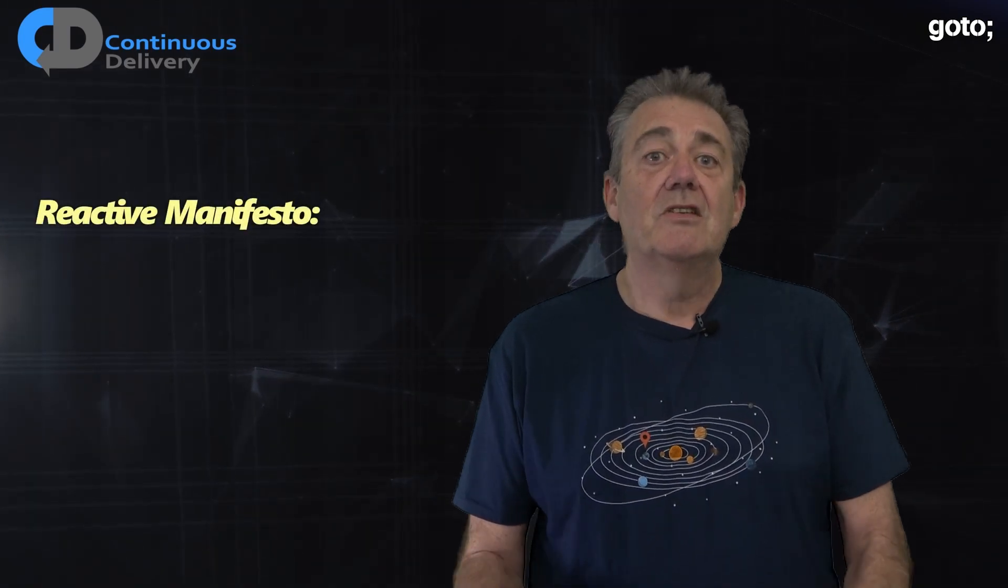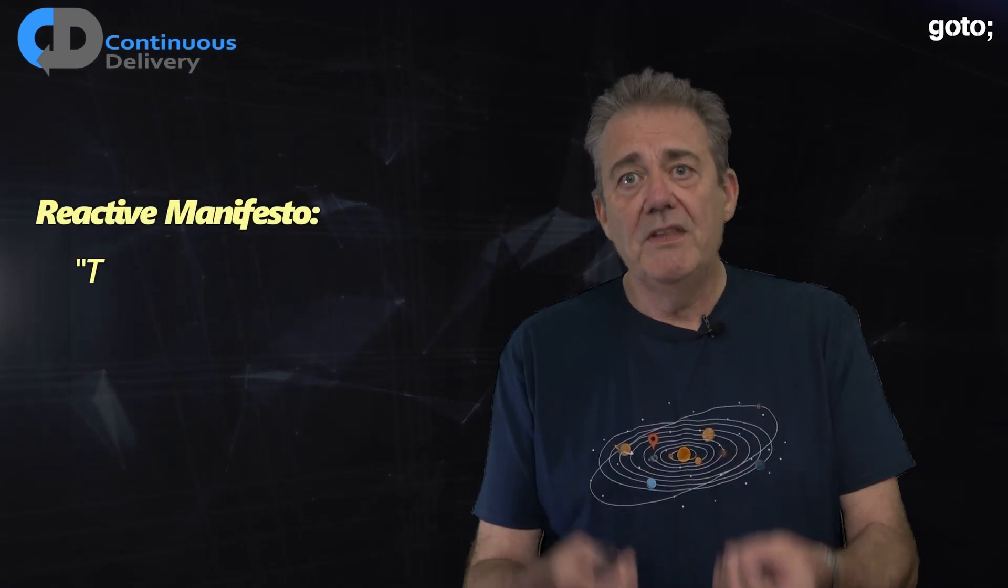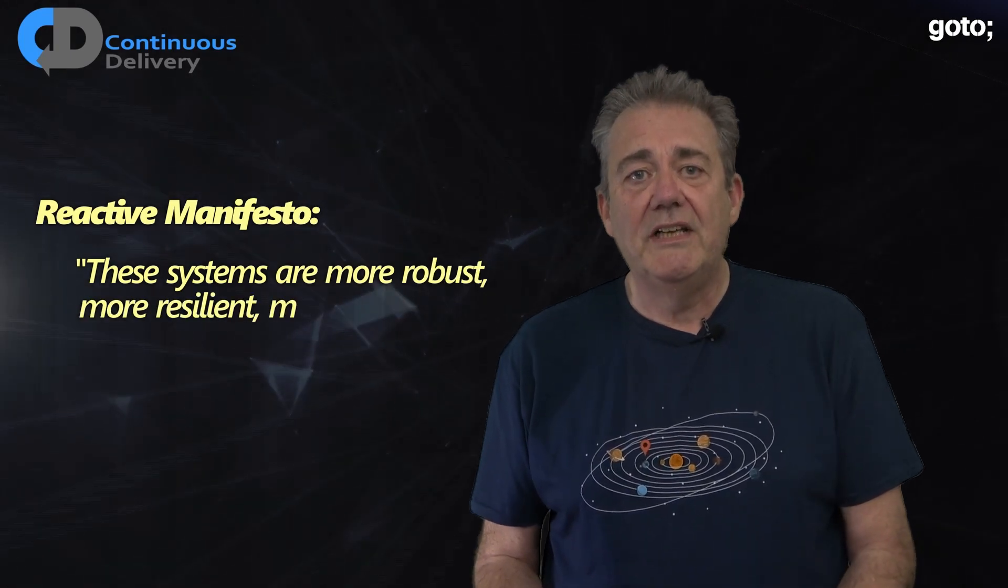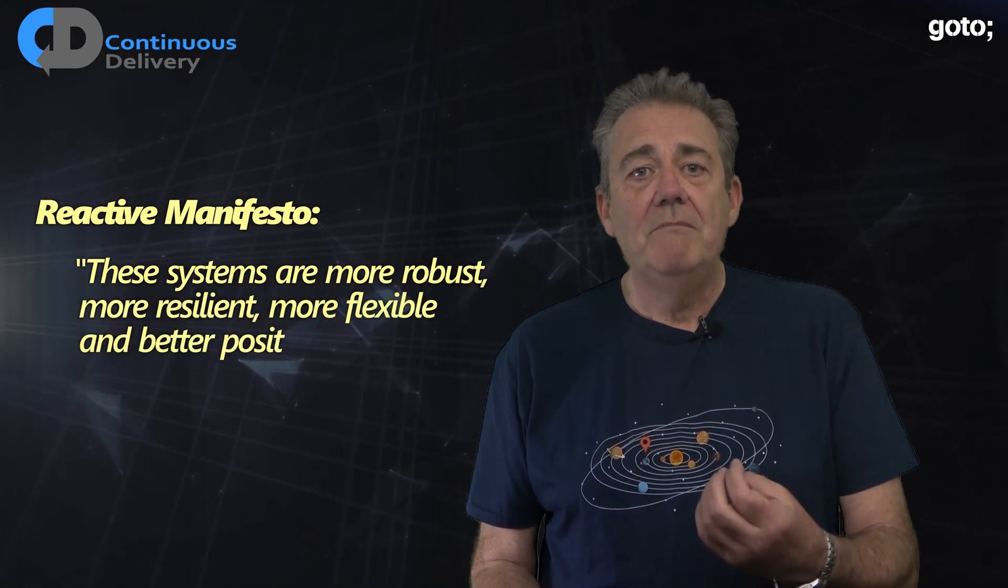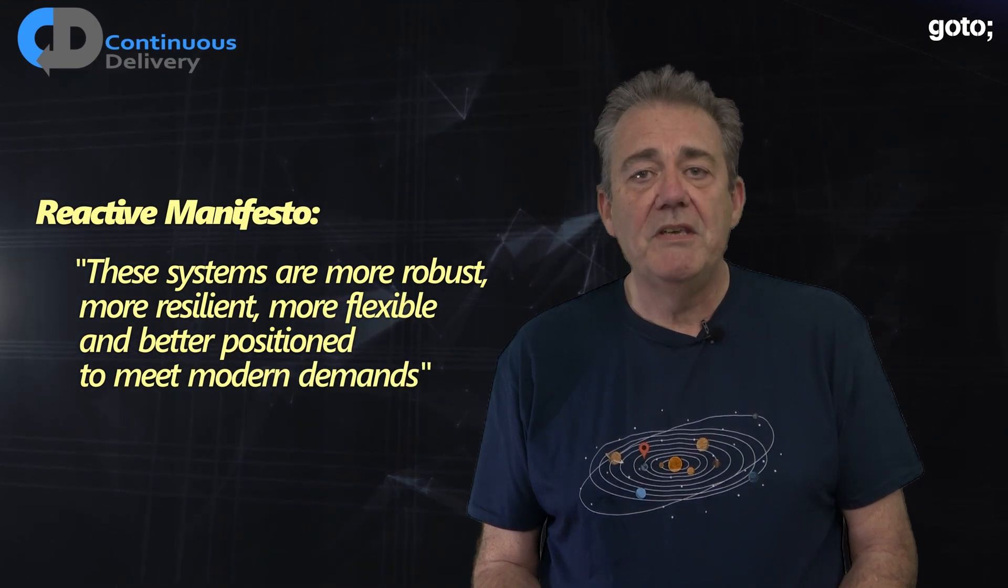A Reactive System is a distributed system that exhibits a number of useful interesting characteristics. To quote the Manifesto, these systems are more robust, more resilient, more flexible and better positioned to meet modern demands.